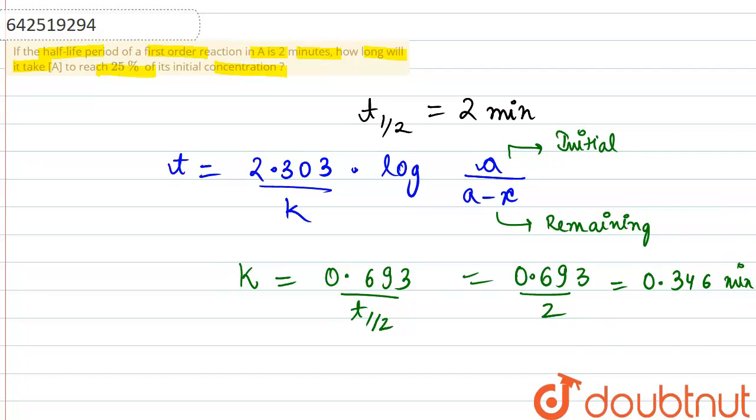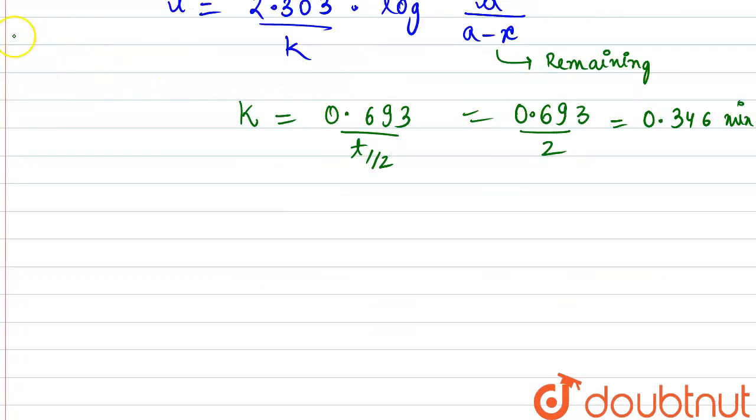Right, this will be the value over here. So we will be substituting these values in the formula of T and we would be getting the value 2.303 divided by K, that is 0.346 minutes, into log of initial concentration is 100 and final is 25 according to the statement of question.